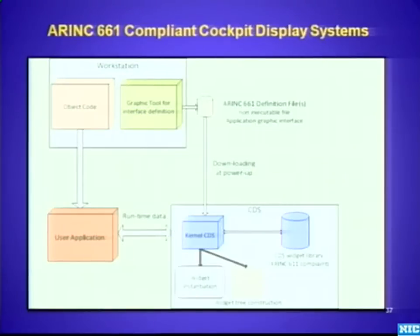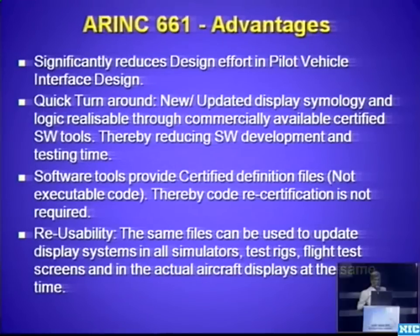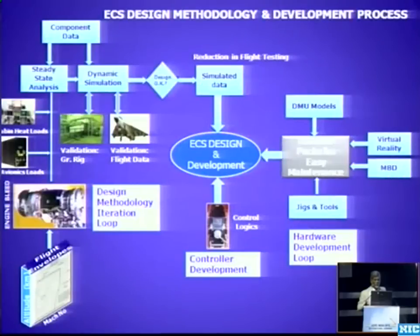Another case study is for the avionic system. Currently ARINC 661 is a process for designing avionic systems — with several advantages. Some of the speakers before me also mentioned that in future, most of the prototyping is done virtually and the physical cycles that have to be done will be reduced. In terms of the environmental control system also, this is the kind of design process one has to go through for the future — we have not done it earlier, but this is what is for the future.